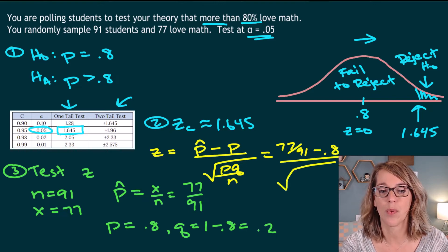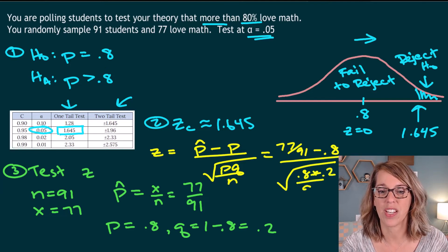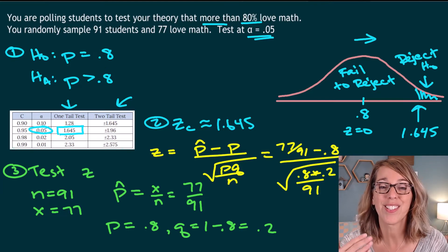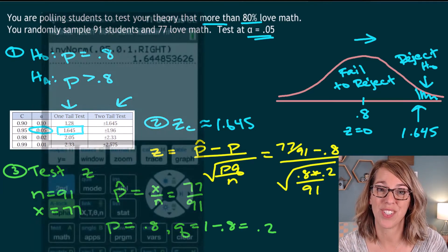So the numbers that we would put if we were doing this using the formula would be that 77 over 91. So 77 over 91 minus 0.8 divided by, and then in the square root, I've got 0.8 times 0.2, all divided by N, which is 91. This is so much more easily done using the calculator.